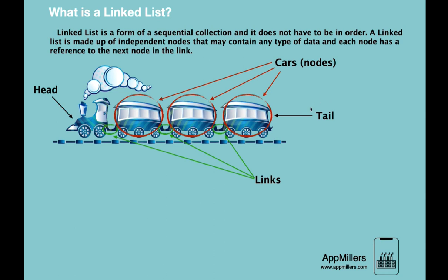Another feature of trains that confirms with linked lists is that both have a head and a tail. The train engine is the head and the last car is the tail. All these cars in the train are independent — if we don't need a compartment, we can remove it but the train still works. We can even add a new compartment by linking it in.